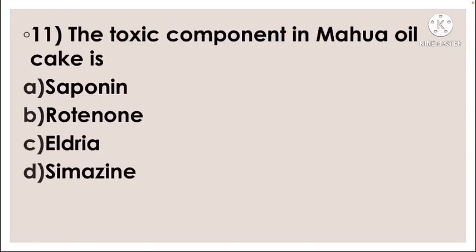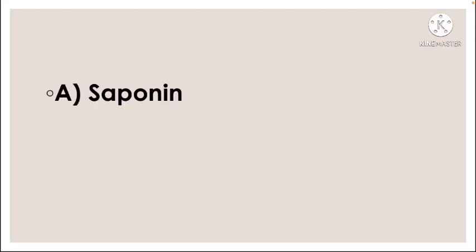Next question: The toxic component in mahua oil cake is — option A saponin, option B rotenone, option C aldrin, option D cymarin. Correct answer: option A, saponin.